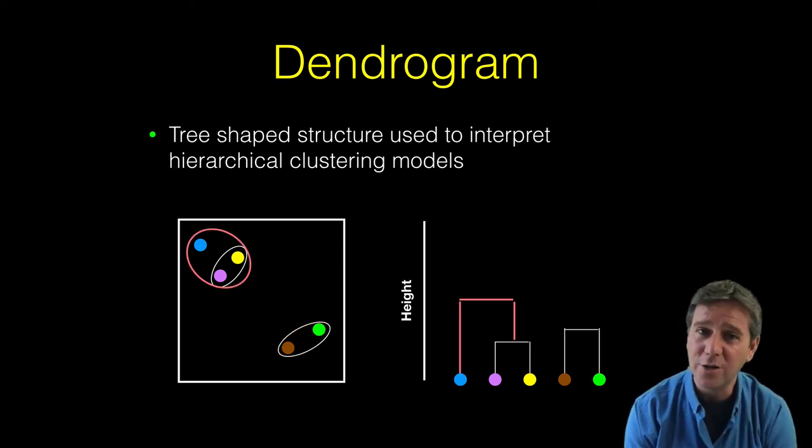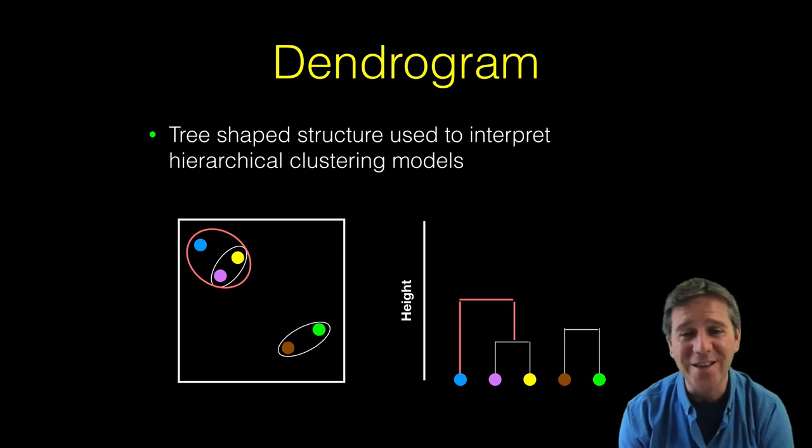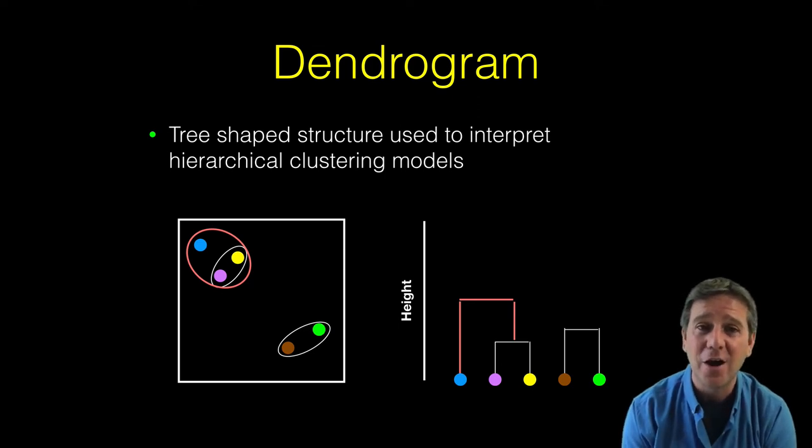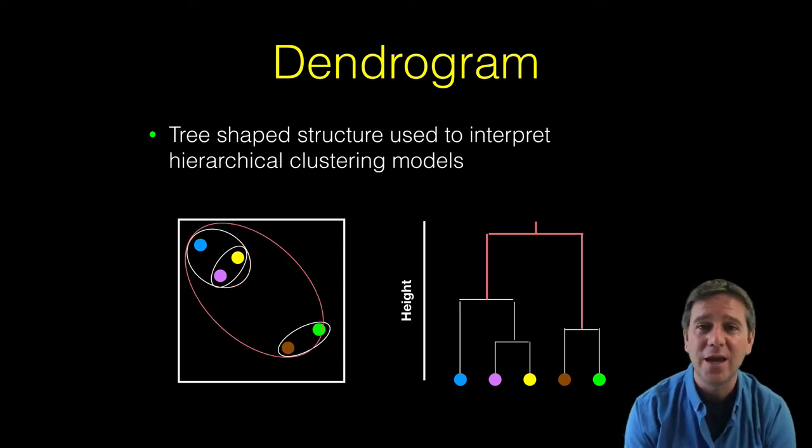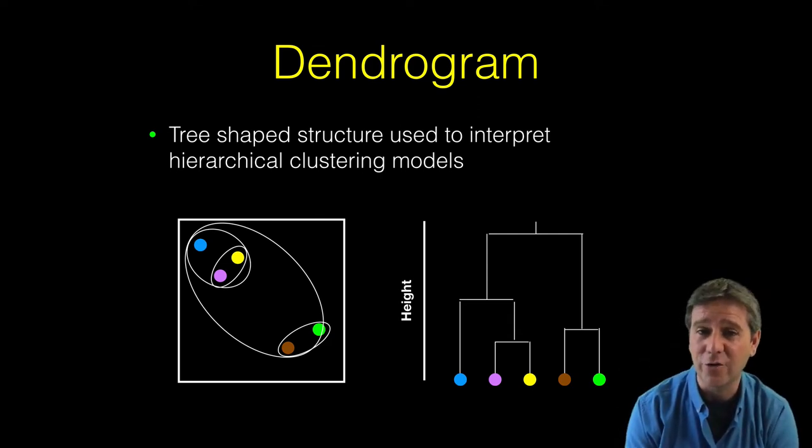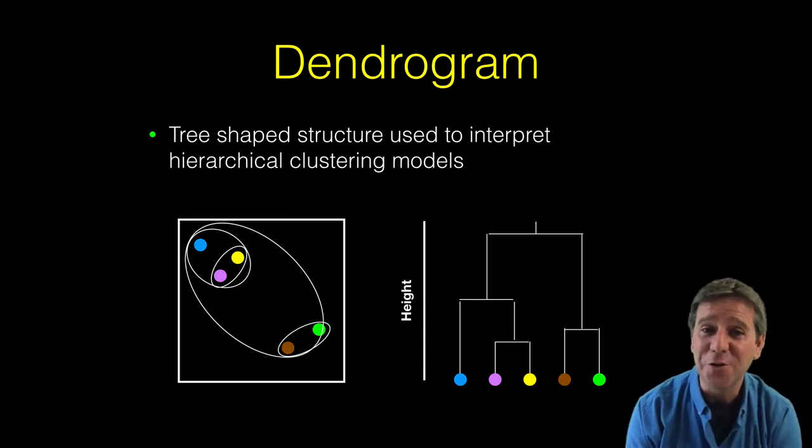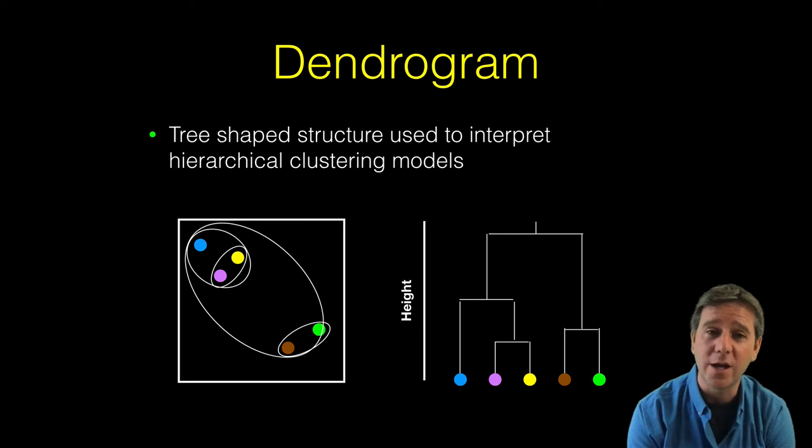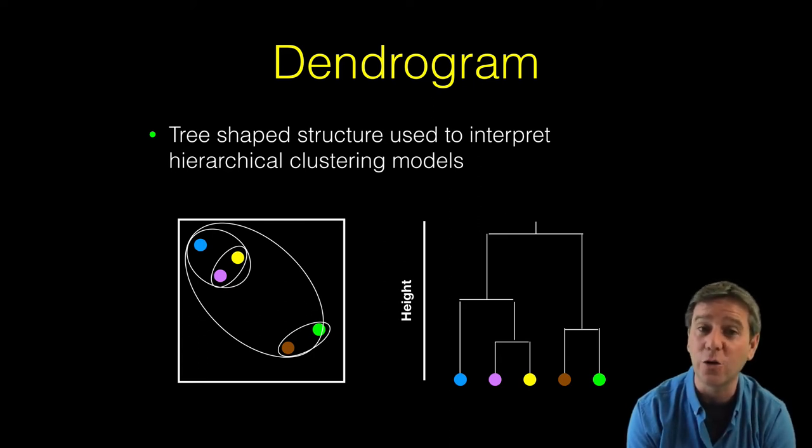Then we have a third linkage where we link the blue point into the previously linked purple and yellow to yield two clusters overall. Again, we draw our crossbar. Finally, we arrive at the top where everything's in one cluster. This yields our final clustering result and the resulting dendrogram figure. Really, it's the height of the crossbar that we want to pay attention to primarily with dendrogram figures - the relative heights of these crossbars convey the important information.